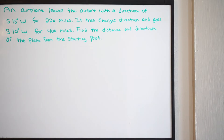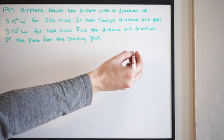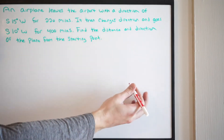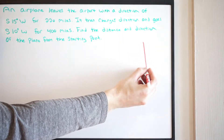So let's go ahead and talk about how we're going to set this up. Whenever we're dealing with these vector application problems and direction problems, we want to go ahead and create a coordinate grid. That's exactly what we're going to do here — we're creating a coordinate grid.